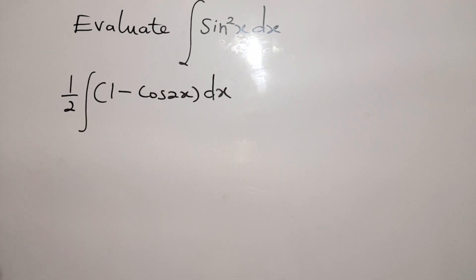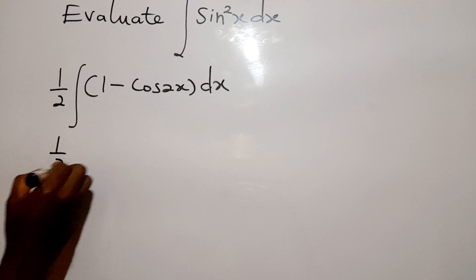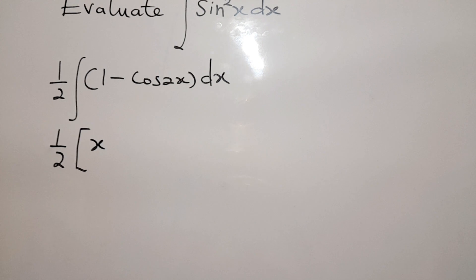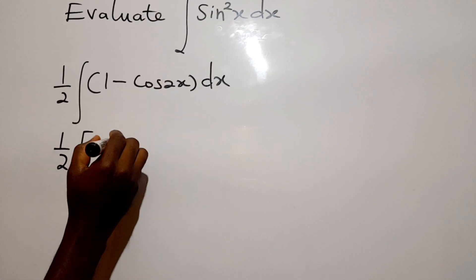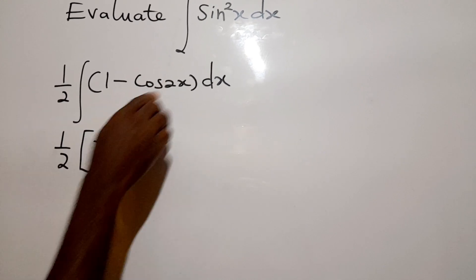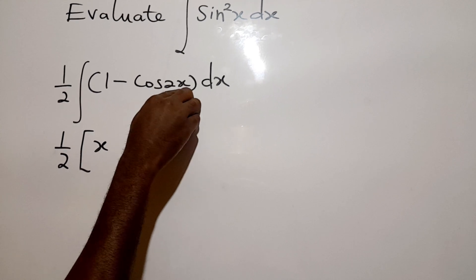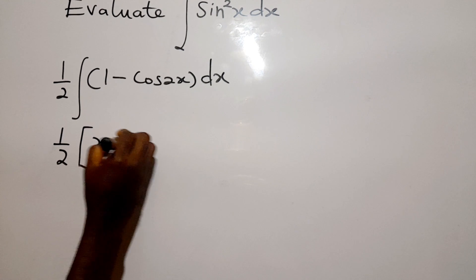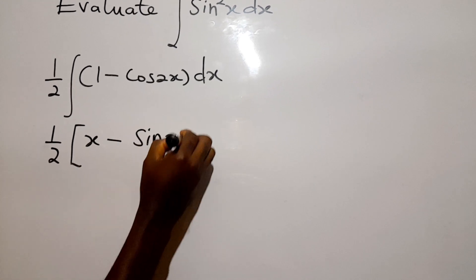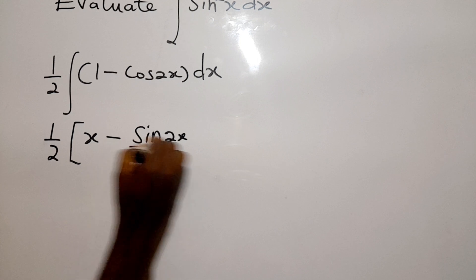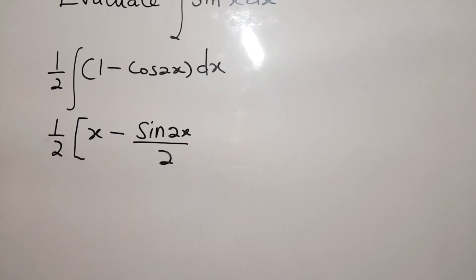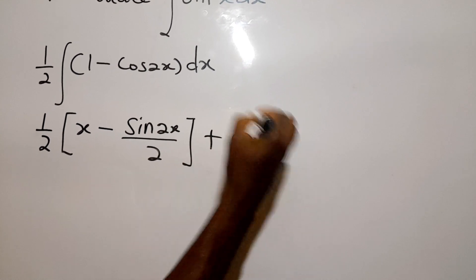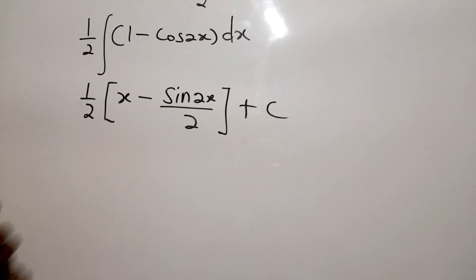So in integrating this, we integrate one to get x. Now how do we integrate this? We differentiate the angle here, which is 2x, to get two. When we integrate cos, we get sine. We repeat the angle and use the differential to divide. Please do check out my videos on how to integrate this on YouTube.